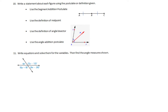Next question: write a statement about each figure using the postulate or given definition. Using the segment addition postulate — which says I can add segments — I can write: segment AB plus segment BC equals AC, the whole thing. I'm not putting hats on top because I'm talking about lengths, so the length of AB plus the length of BC adds up to the whole length AC.